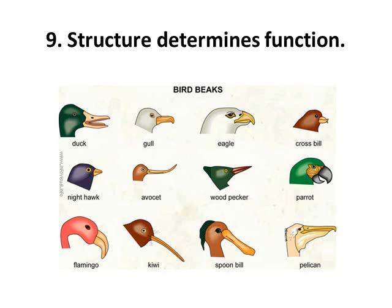In addition to the eight characteristics of life, we have four more principles. The ninth principle: structure determines function. On this slide we have lots of different bird beaks. Some bird beaks are long and skinny, like the kiwi. Other bird beaks are strong and sharp, used to tear up meat, like the eagle. And other birds have strong beaks used to crush seeds to get food. So organisms have these adaptations — different structures with different functions.